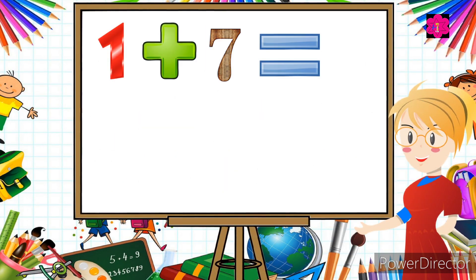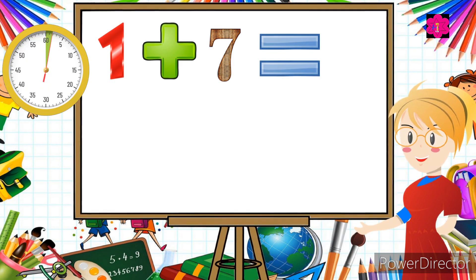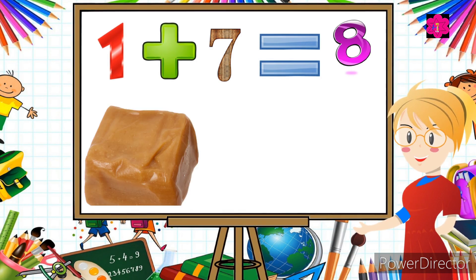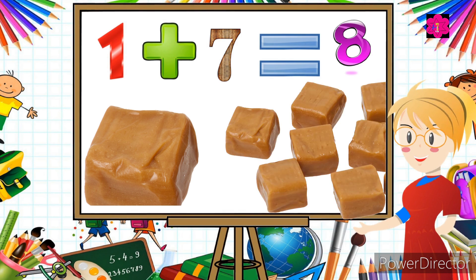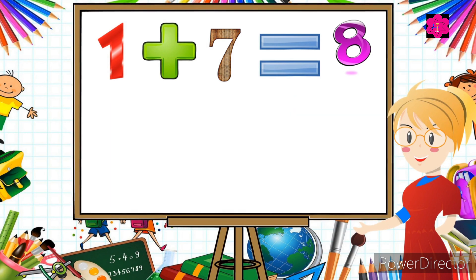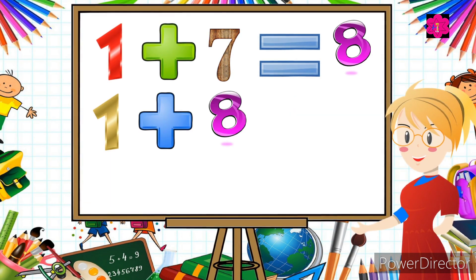Next question: one plus seven is equal to...? We add seven more chocolates. Now count together: one, two, three, four, five, six, seven, eight. One plus seven is equal to eight.